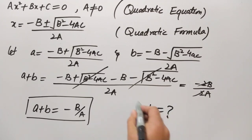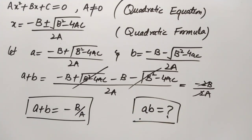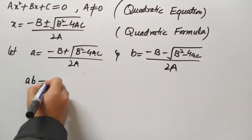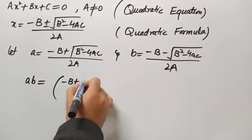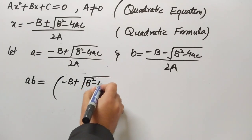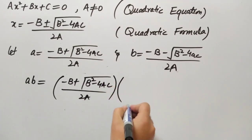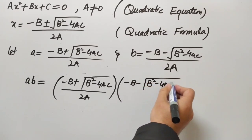Now if the product of roots is given — αβ — how do we solve this? We are going to derive the formula the same way we derived it for α + β. We take the two roots, multiply them, and we will get the formula. So we write αβ = [(−b + √(b² − 4ac)) / 2a] × [(−b − √(b² − 4ac)) / 2a].